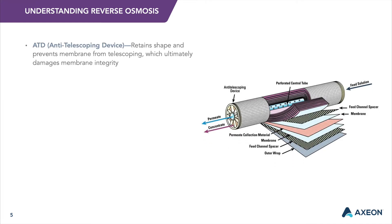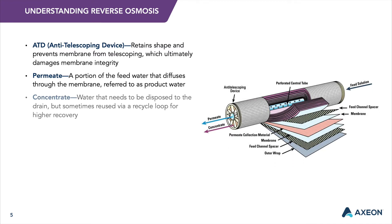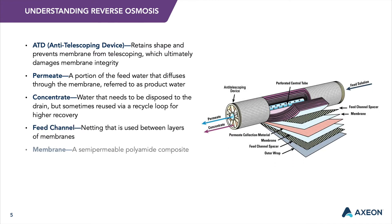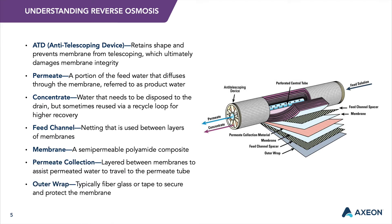In practice, reverse osmosis and nanofiltration are applied as a cross-flow filtration process. For today's training purposes, we will refer to this as a reverse osmosis or RO membrane element. Membranes are thin-film composite membranes packed in a spiral-wound configuration. Spiral-wound designs offer many advantages compared to other module designs, such as tubular, plate-and-frame, and hollow-fiber module design for most reverse osmosis applications in water treatment.